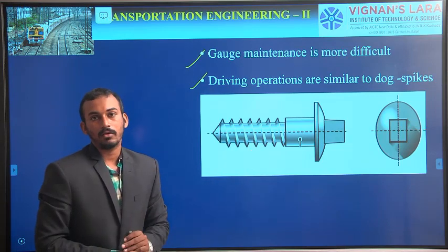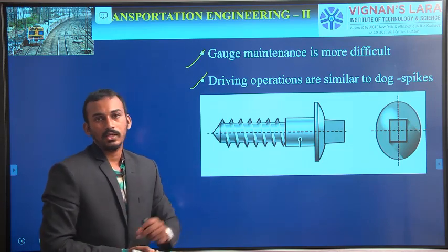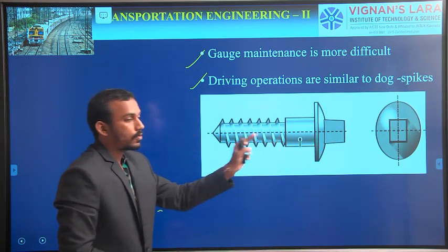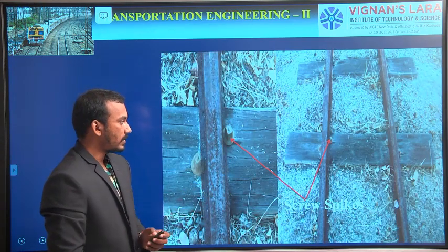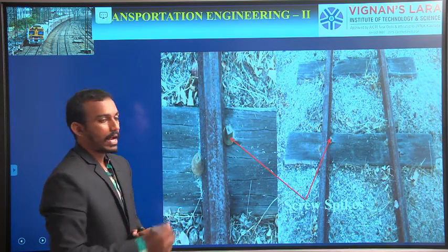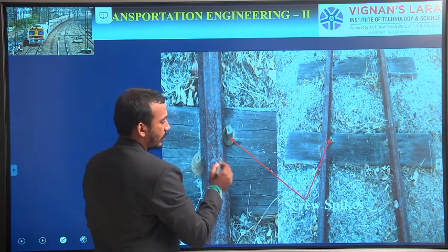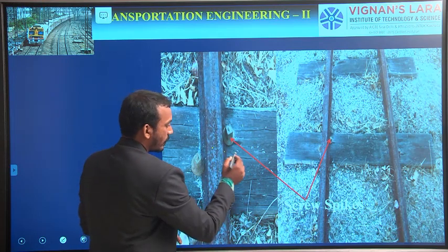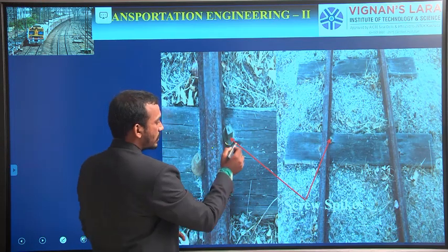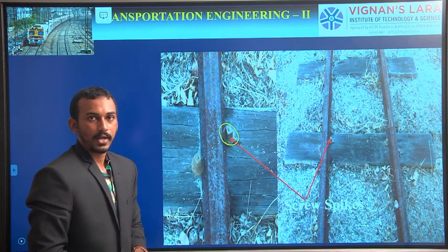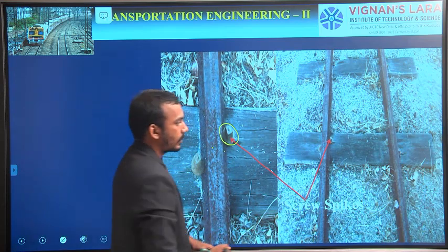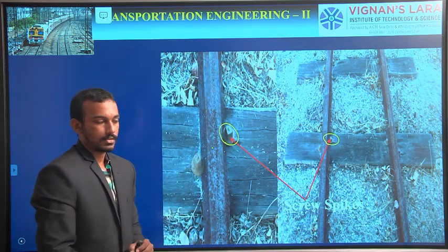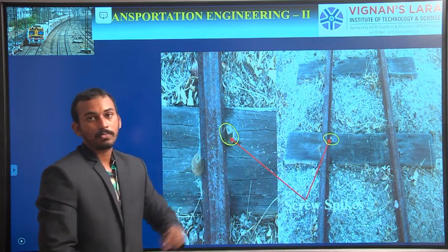The driving operation is very similar to the dog spike. Even though it has a thread, we generally use impact loads to drive them into the timber sleepers. These are the screw spikes. Let's see the practical image — this is a rail, this is a timber sleeper. We are connecting the flange of the rail with this timber sleeper using screw spikes. These two are the screw spikes.